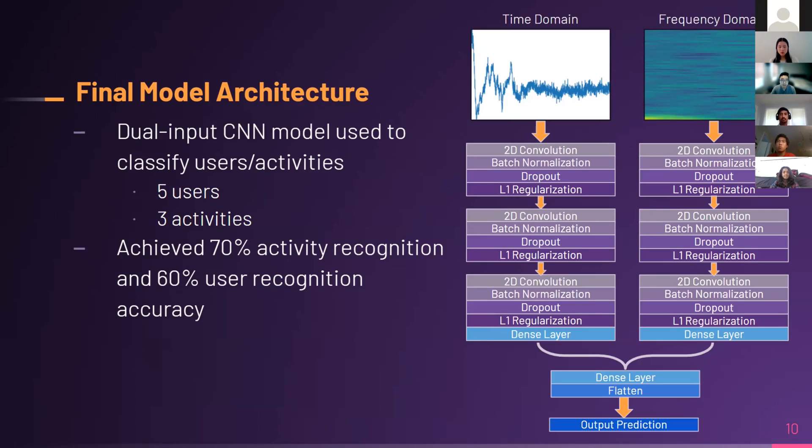For the scope of our project, the model was fed CSI data from five different users which were conducting three different activities: sitting, squatting, and walking. Overall, we achieved 70% activity recognition and 60% user recognition.